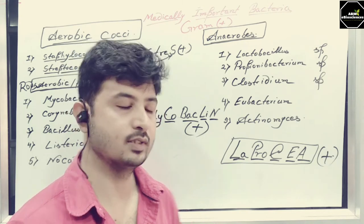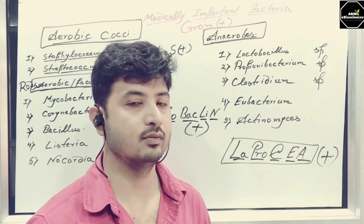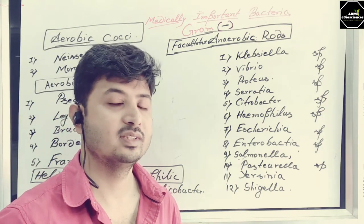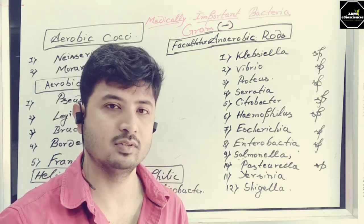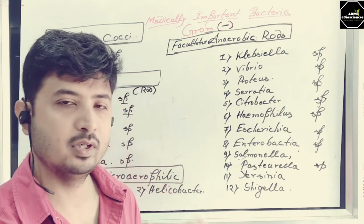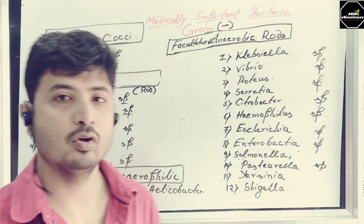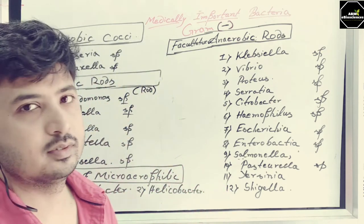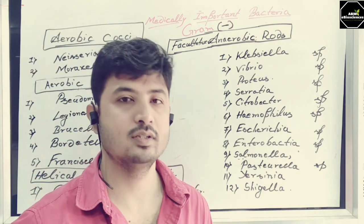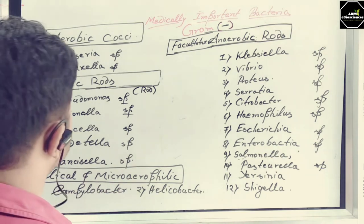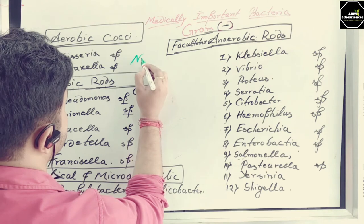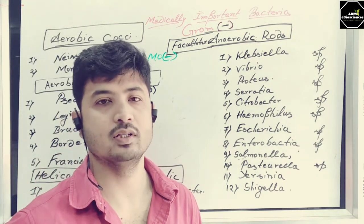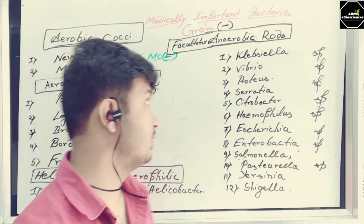Now I'll go to the gram-negative section, which has several bacteria and is a vast section covering the most variety and most pathogenic bacteria. The first gram-negative category is aerobic cocci. The word to remember here is 'Nemo Negative.' Nemo is a popular film — you can remember it with the help of that. So aerobic gram-negative cocci: Nemo Negative.